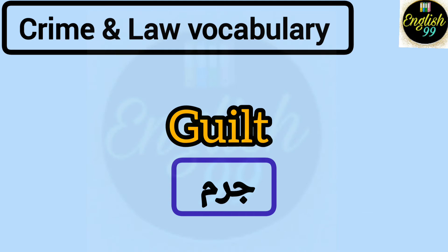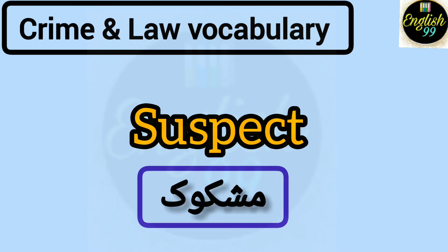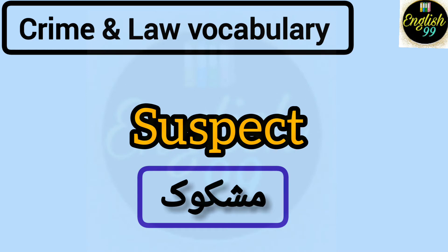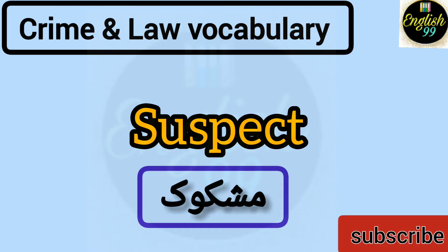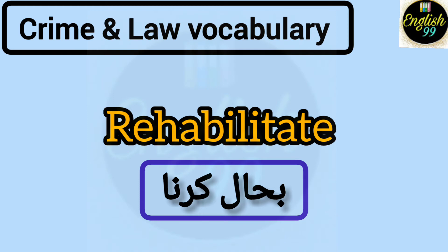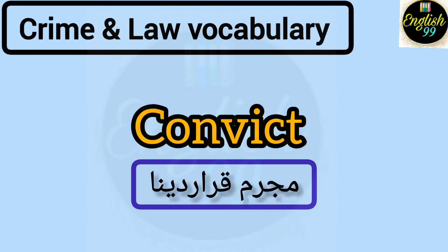Jurm, qusoor ya gunah ko English mein kehte hain guilt. Mujrim ko English mein kehte hain guilty. Mashkook shakhs — jis par shak ho — usse English mein kehte hain suspect. Bahaal karna — isi English mein kehte hain rehabilitate.